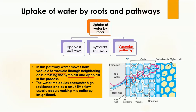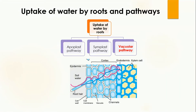Water can encounter high resistance in the vacuolar pathway, and as a result little flow usually occurs, making this pathway insignificant compared to the apoplast and symplast pathways. The vacuolar pathway is not responsible for transporting large amounts of water and minerals — only small amounts move through it. This is because the vacuole already contains many things, making movement of salt and water difficult from one vacuole to another. That covers the uptake of water by the roots and their pathways.